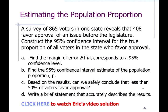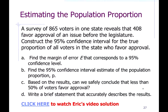Here's what a question looks like: a survey of 865 voters in one state reveals that 408 favor approval of an issue. Construct a 95% confidence interval for the true proportion of all voters in the state who favor approval. I'm not going to solve this here — I have a separate video where I work through this problem start to finish in Excel.